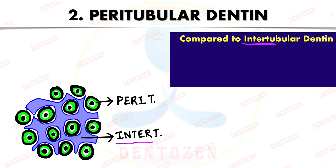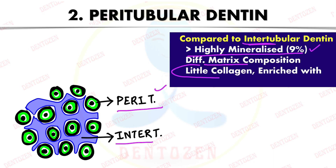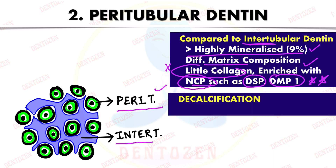Comparing peritubular dentine with intertubular dentine — which is present between the tubules — peritubular dentine is more highly mineralized than intertubular dentine by about nine percent. It also has a different matrix composition: less collagen and more non-collagenous proteins such as dentine sialoprotein and dentine matrix protein 1.